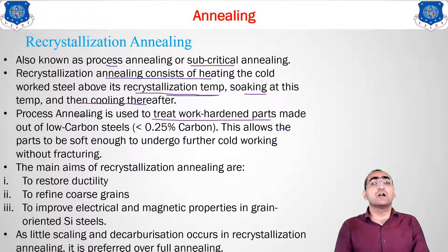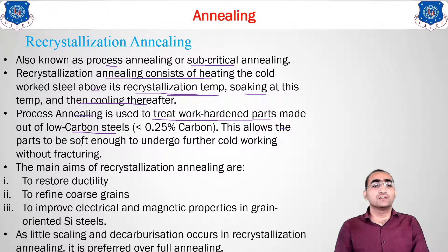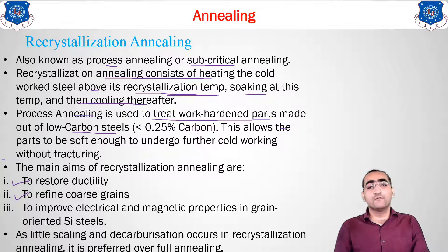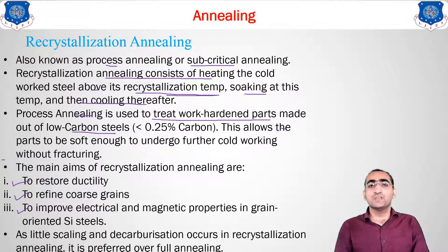Process annealing is used to treat work-hardened parts. Whatever work hardening, strain hardening, or strengthening mechanisms we saw in unit number 2 — for those parts we use this method. Or if you go for low carbon steel, then also we can go for the recrystallization annealing. The aims of using this method are: first, to restore the ductility of the material; second, to refine the coarse grain — if you want finer grains, coarser grains can be eliminated by recrystallization annealing; and third and most importantly, to improve electrical and magnetic properties.